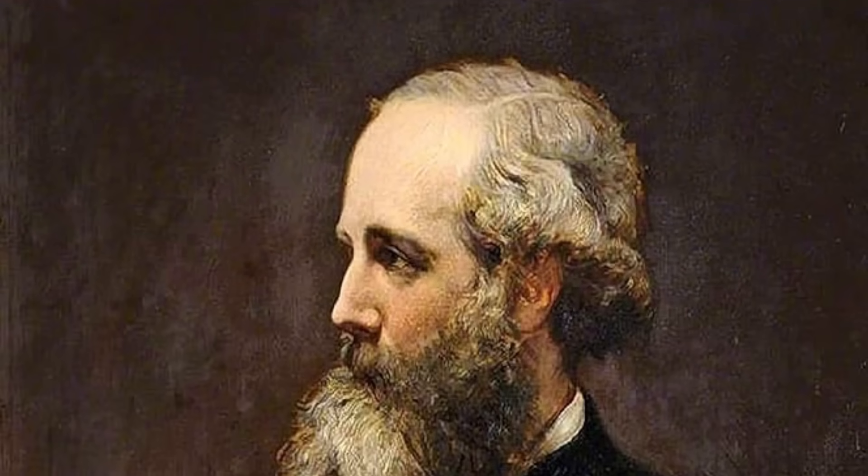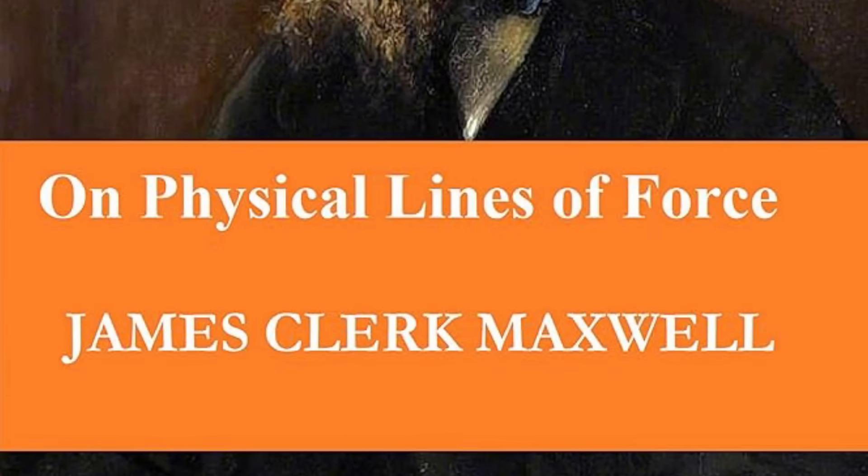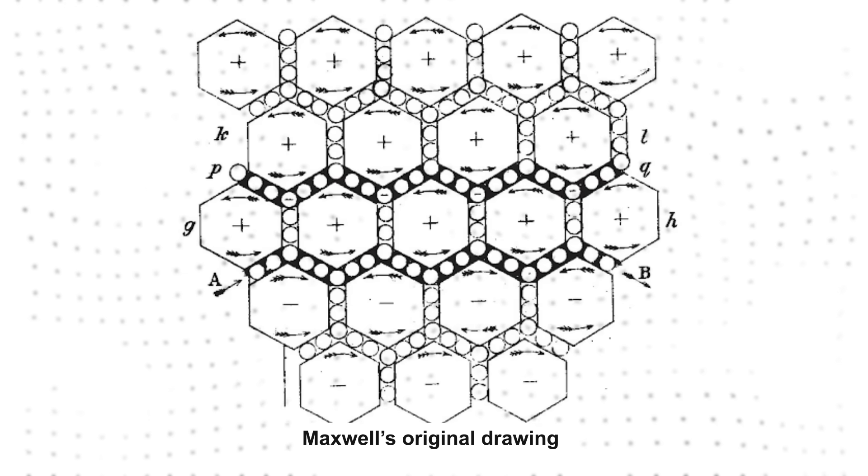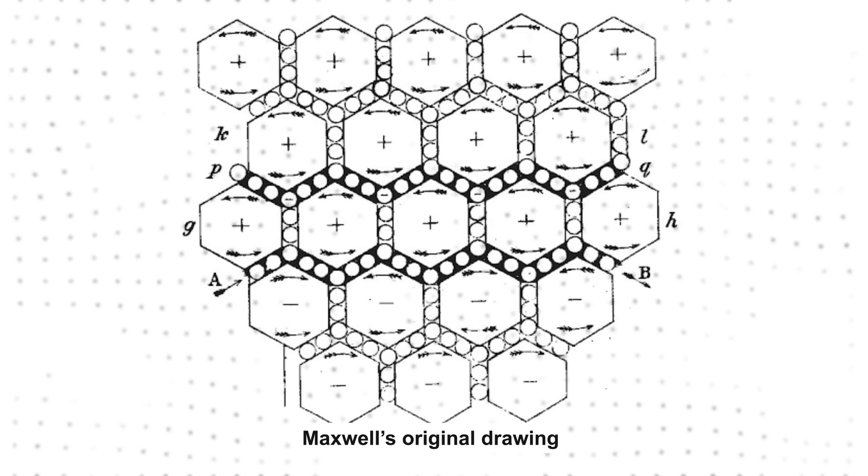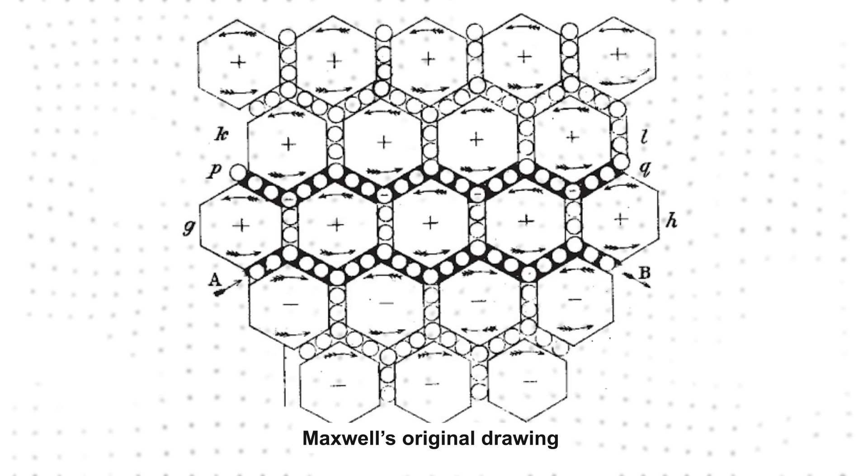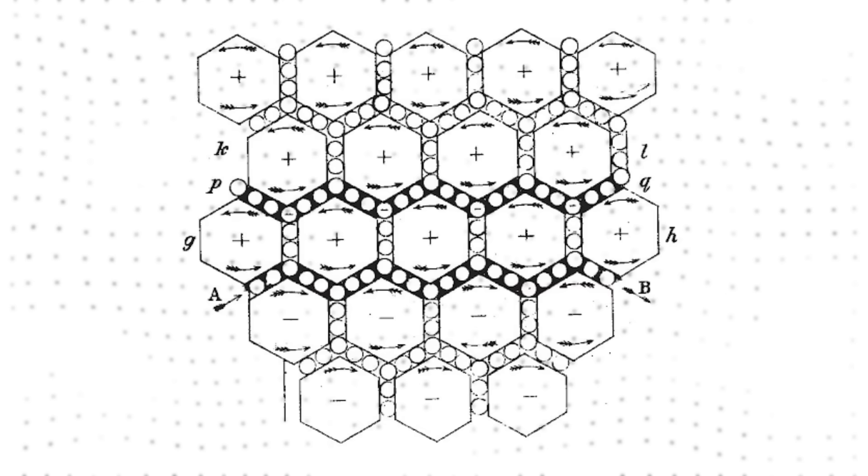In 1861, he published a paper titled On Physical Lines of Force with these mechanical models. In that paper, he had a slightly different version where hexagons represent the vortices. The ball bearings are current carrying particles. Remarkably, this model could explain all known phenomena of electromagnetism.